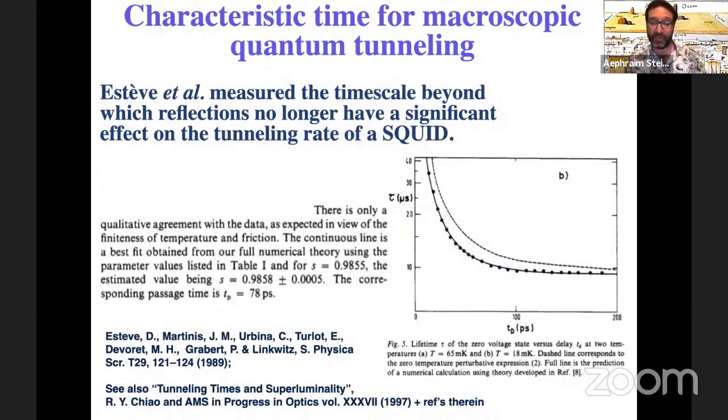So this plot here is time versus time. It's the characteristic decay time versus the length of that delay line. And based on the critical behavior of this curve, they extract an order of magnitude for the duration of the tunneling event, which you see in their case was about 78 picoseconds. So that was 30 years ago.